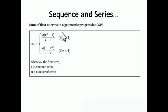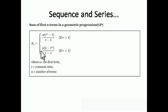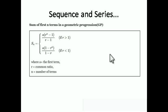This is a very important formula for Geometric Progression. The sum of n terms is: Sₙ = a(rⁿ − 1)/(r − 1) when r > 1. If r < 1, then use: Sₙ = a(1 − rⁿ)/(1 − r). Here, a is the first term, r is the common ratio, and n is the number of terms. You just have to remember these formulas — there is no derivation needed.